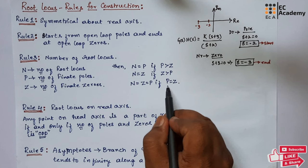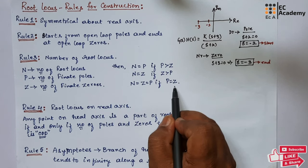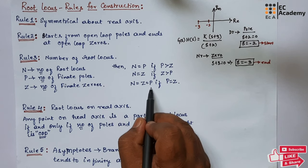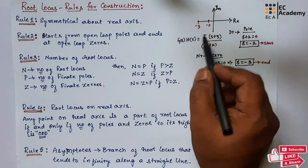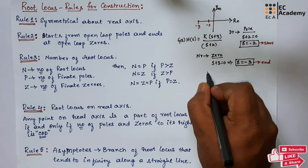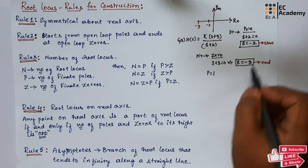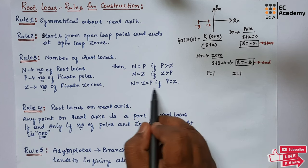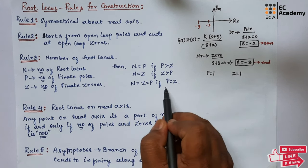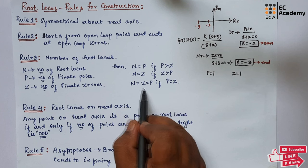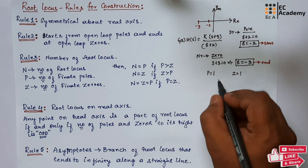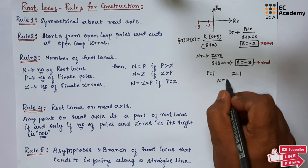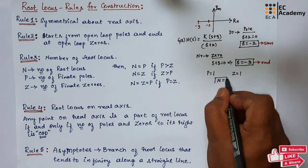If the number of poles equals the number of zeros, the number of root loci equals both. In the same example, we got 1 pole and 1 zero. Since poles and zeros are the same, the number of root loci will be equal to 1.